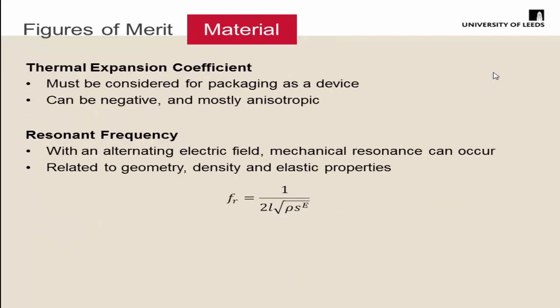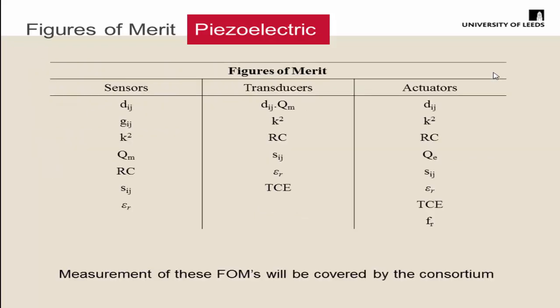Some things typically overlooked in the literature when considering high-temperature materials are thermal expansion coefficient, which are extremely important when you want to take these materials and put them into a device, and resonant frequency — it's related to geometry, density, and elastic properties, so we need to understand them to be able to carry out some of the techniques described later.